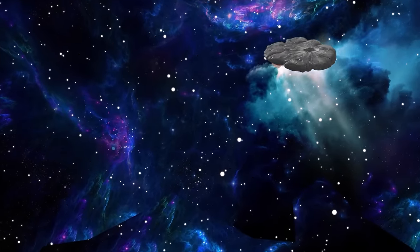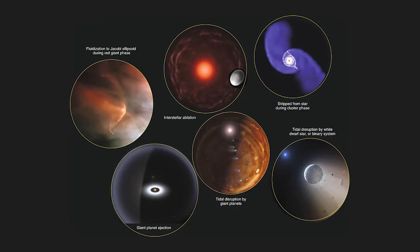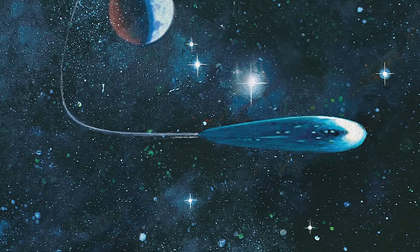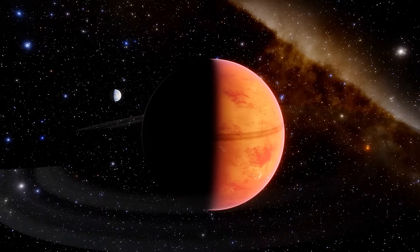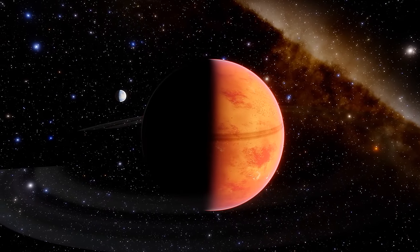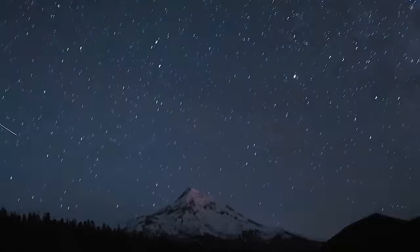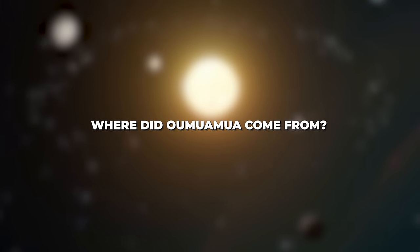Oumuamua's arrival in our solar system marked a significant milestone in our exploration of the cosmos. It provided compelling evidence that interstellar objects can indeed visit our neighborhood and raised intriguing questions about the nature of these objects and their origins. As we continue to study the mysteries of the universe, discoveries like Oumuamua remind us of the vastness and complexity of the cosmos that await further exploration. Now, to properly understand why Neil deGrasse Tyson believes Oumuamua isn't what we were made to believe, there are a few details that we knew way before now that we didn't consider.